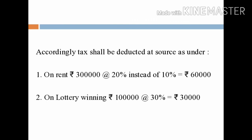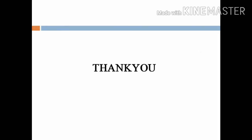Lottery winnings of rupees 1 lakh at the rate of 30%: TDS deductible is rupees 30,000. So the TDS deducted on lottery winnings is rupees 30,000. Hope you all understand this problem. Thank you.